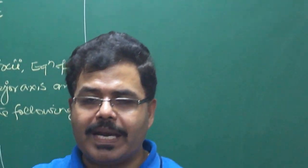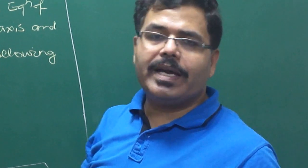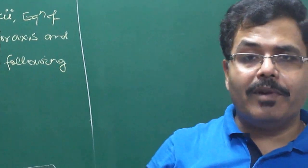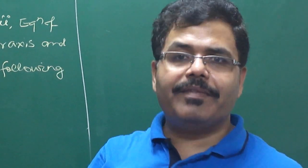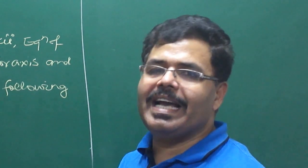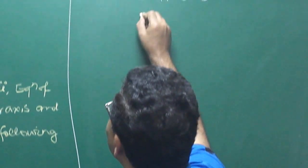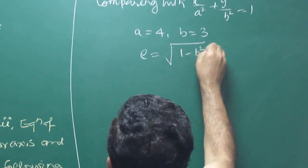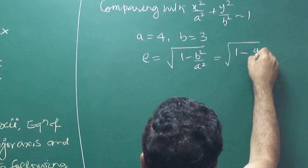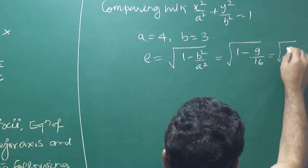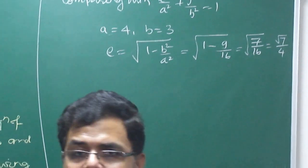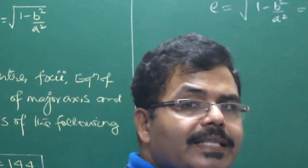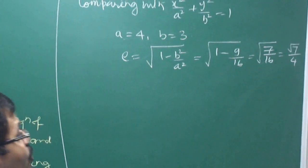In a parabola, E equals 1, so we do not need to calculate it separately. But in an ellipse, E is less than 1, and in a hyperbola, E is greater than 1, so we must calculate it. Here, e equals the square root of 1 minus b squared by a squared, that is 1 minus 9 by 16, which gives 7 by 16, so e equals root 7 by 4. We do not take the negative value since ratio cannot be negative.